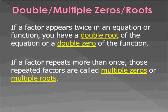Double or multiple zeros or roots: if a factor appears twice in an equation or function, you have a double root of the equation or a double zero of the function. If a factor repeats more than once, those repeated factors are called multiple zeros or multiple roots. For example, if you had x cubed equals 0, that would be a triple root.